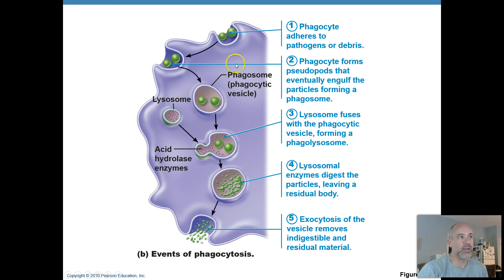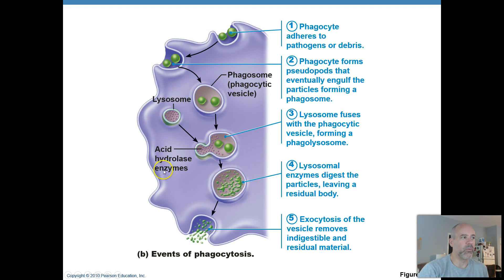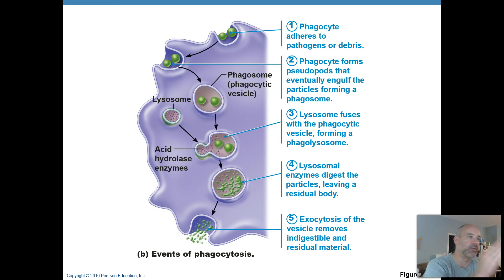A lysosome fuses with this compartment, called a phagosome or phagocytic vesicle, which contains the bacteria or foreign substances. All these enzymes get dumped onto the foreign substances and they get chopped up. These acid hydrolase enzymes use water molecules to break bonds — hydrolysis reactions, if you remember from biology 201. Hydrolysis reactions are used to chop up things like proteins into amino acids and carbohydrates into monosaccharides. That's what those enzymes are doing — enzymes perform chemical reactions.